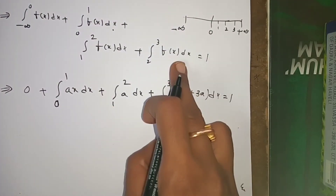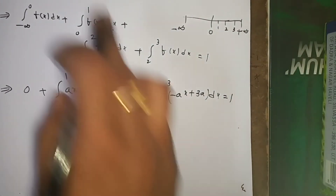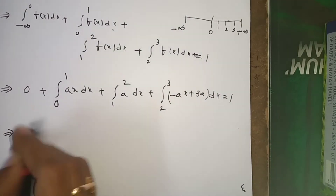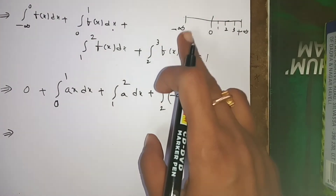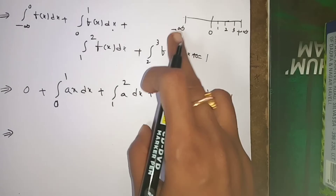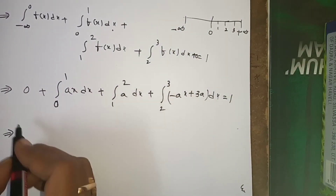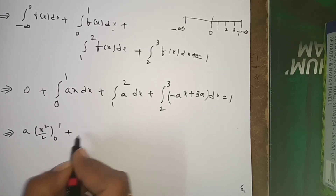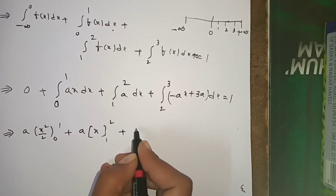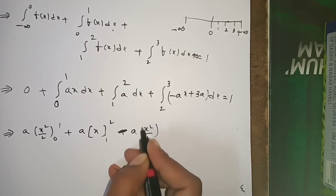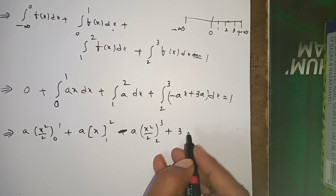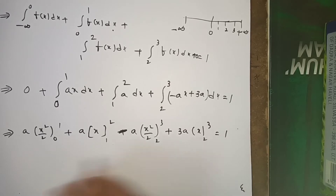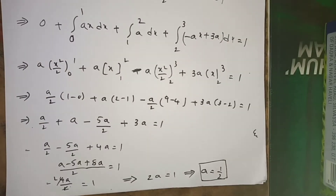The integral from 3 to plus infinity is also 0 in the remaining cases. Now integrating each part: a·(x²/2) from 0 to 1, plus a·x from 1 to 2, plus (-a·x²/2 + 3a·x) from 2 to 3, equals 1. After integration and simplification, canceling terms, you get a = 1/2.